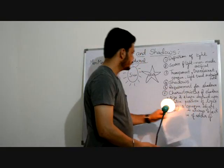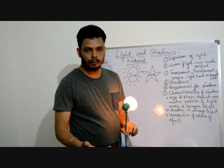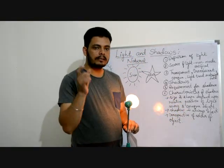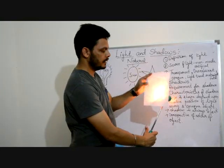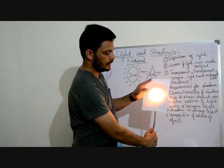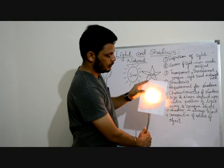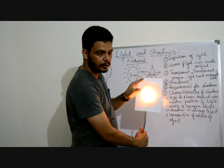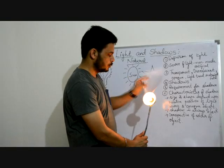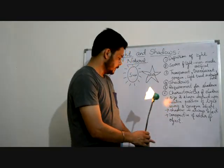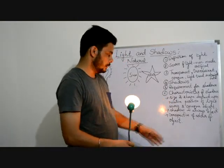Next are translucent objects. Those objects which partially allow light to pass through them — partially means some of it, not all. See, now the light is there and if you take this, this is translucent — it partially allows the light to pass through it. Examples can be butter paper, tissue paper, and oils are also examples of translucent.